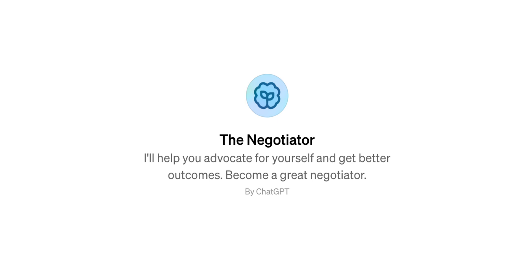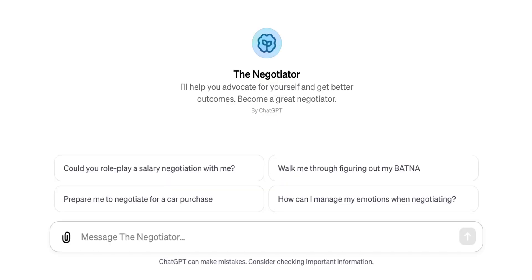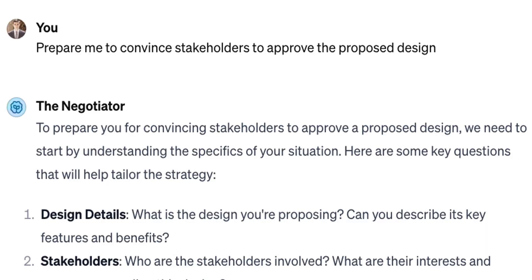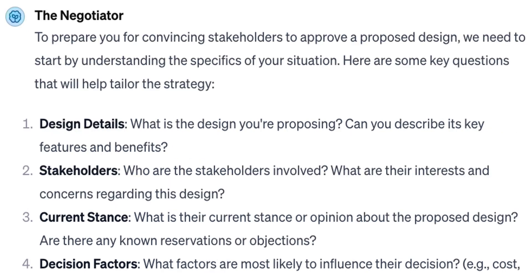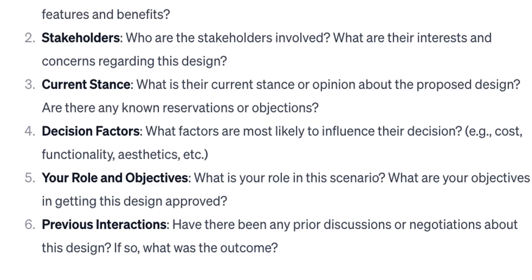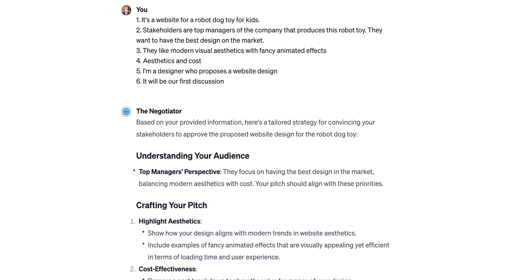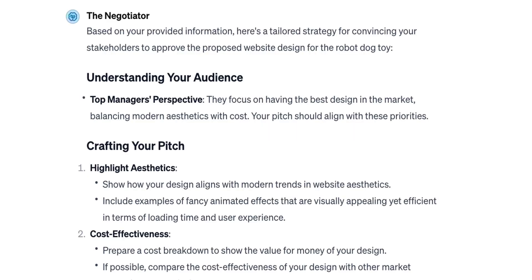Negotiator is the next one we will discuss. This GPT trains us to become better negotiators, whether we want to negotiate a better salary or a budget for usability testing in our organization. You can use this tool to create a negotiation strategy or role-play an actual negotiation. Let's ask the tool to help us build a good strategy to negotiate for a product buy-in from stakeholders. The tool tries to understand our intention and the context of interaction with stakeholders, so we will need to answer some specific questions about the design solutions we propose, our stakeholders, and their expectations. Once you provide all this information, the tool will generate a handy strategy for you.